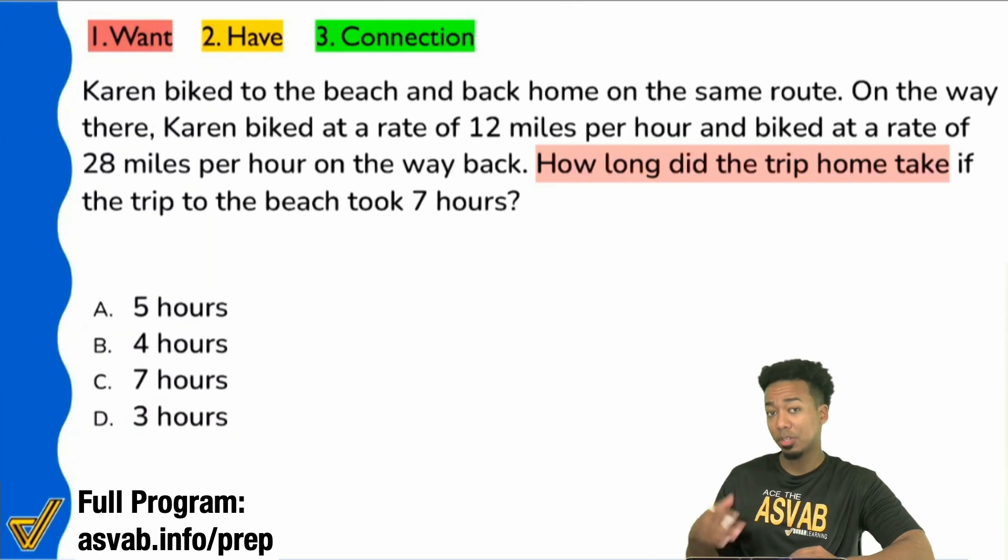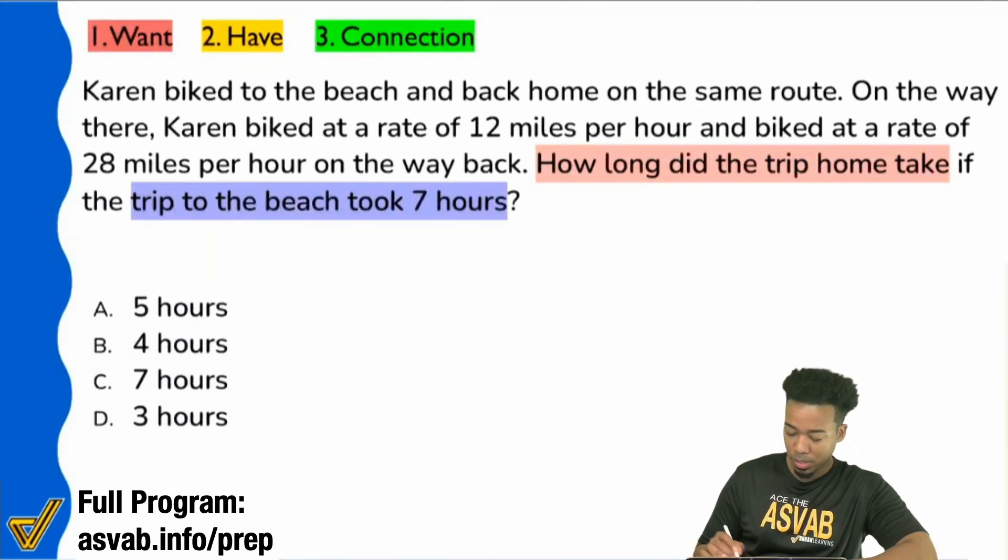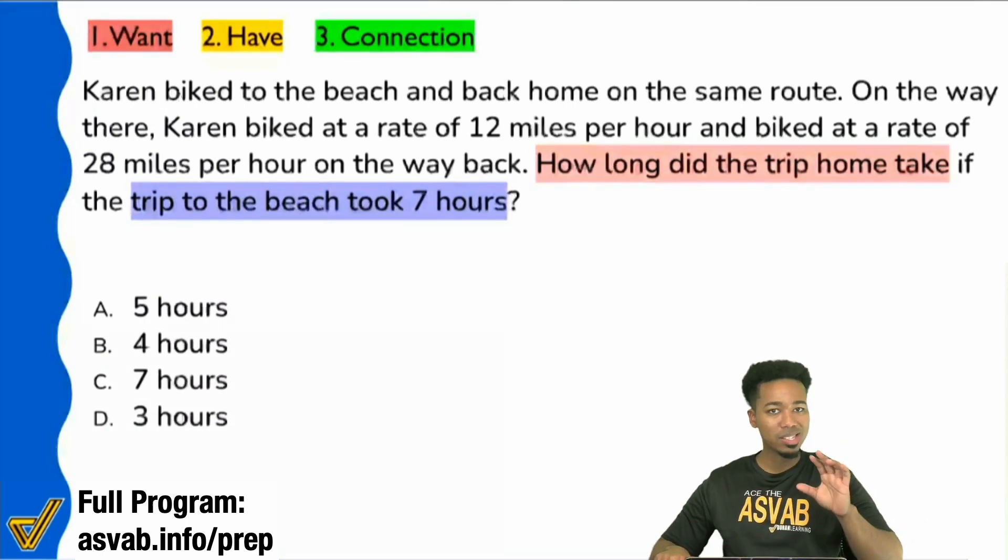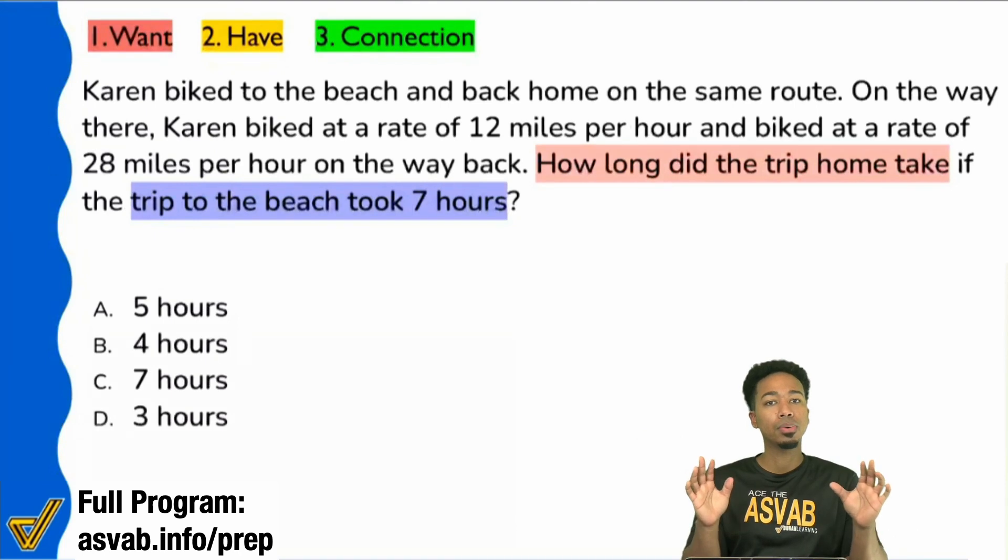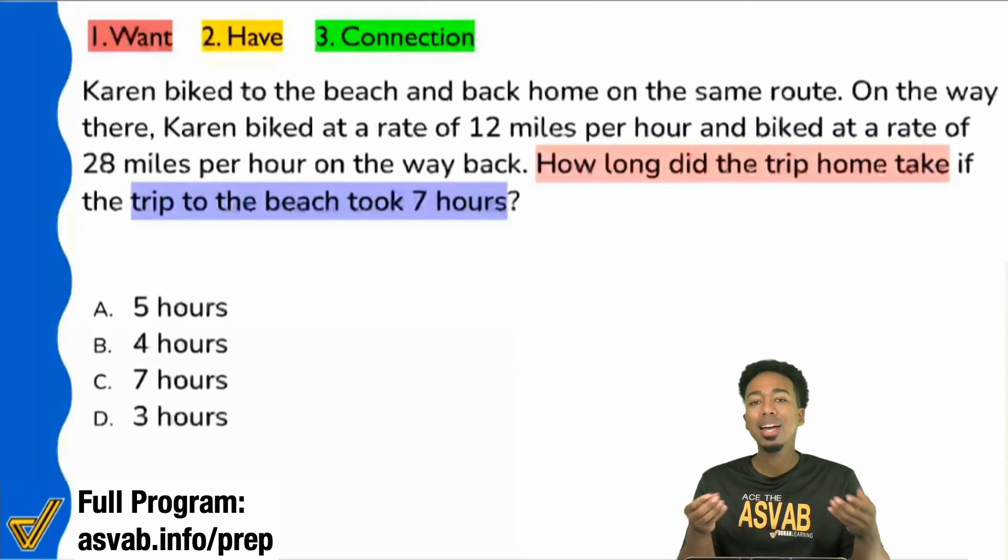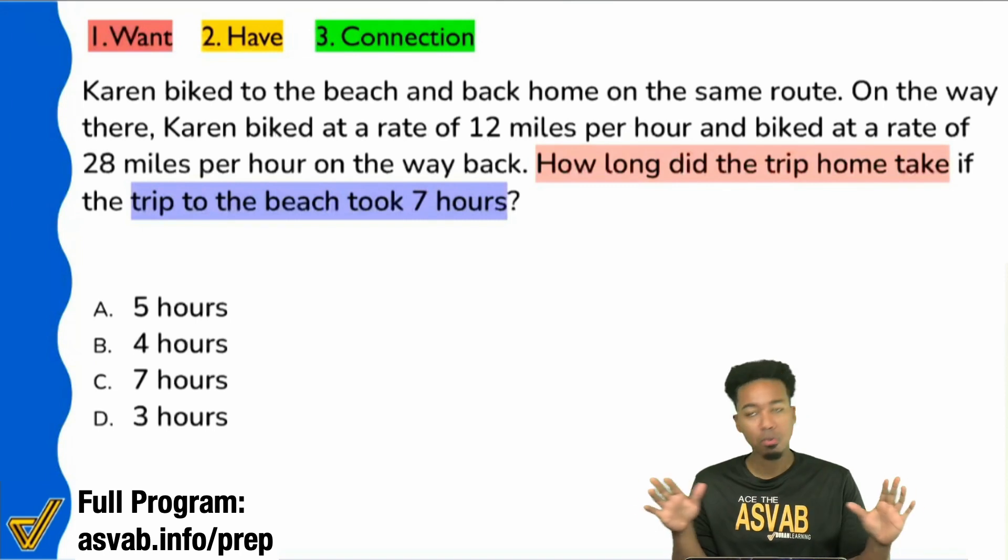The question sentence says, how long did the trip home take if the trip to the beach took seven hours? So let me highlight this. How long did the trip home take? That's what we want. They give you some extra information. They tell you that the trip to the beach took seven hours. So everybody, in that one sentence, in the question sentence, first and foremost, yes or no, do you understand that what we're looking for is how long it took us to get home? Does that make sense? We're going to take this step by step here. I got you.